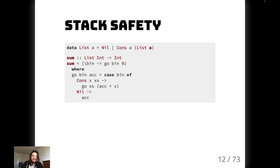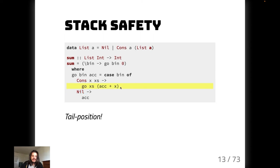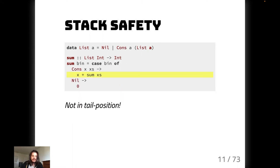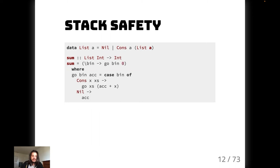However, we can do a simple transformation called a worker-wrapper transformation. It has a worker `go` that is recursive and a wrapper that invokes the worker. In this worker, we take an additional argument — an accumulator — and keep that state. We only call ourselves in tail position: instead of invoking the recursive function then doing something with the result, we add to our running accumulator first and then recurse. This gives us tail position, and since it's first order, it compiles into a tight JavaScript loop without eating additional stack space.